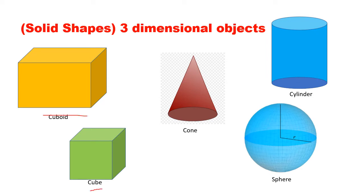In today's lecture we are going to study the cylinder. Now observe the cylinder carefully. What is the difference between a cuboid, a cube and a cylinder? The basic difference is that the cuboid has got three dimensions: a length, a breadth, and a height. But all these edges are straight edges.